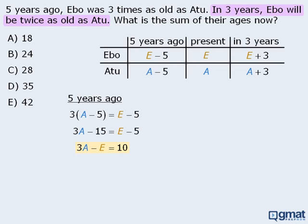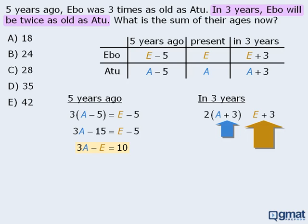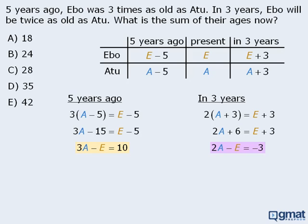Now let's work with the information regarding their ages 3 years in the future. Here's Attu's age in 3 years, and here is Ibo's age in 3 years. These ages are not equal, since the question tells us that Ibo's age is twice that of Attu's age. So if we take Attu's age and multiply it by 2, these two values will be equal. From here we can take this equation and expand the left hand side, and then rearrange the terms to get another equation with 2 variables.